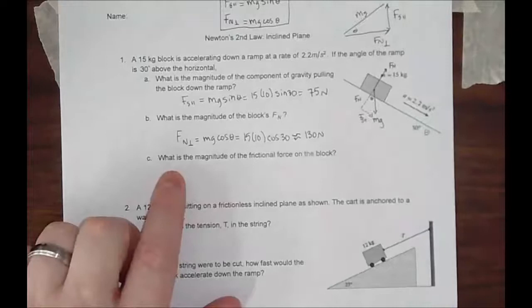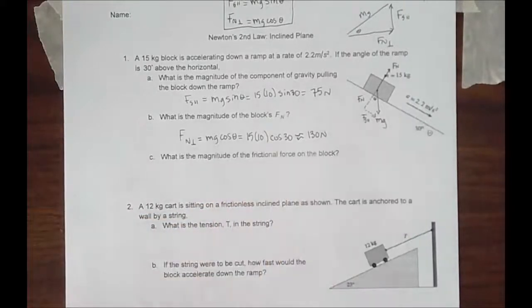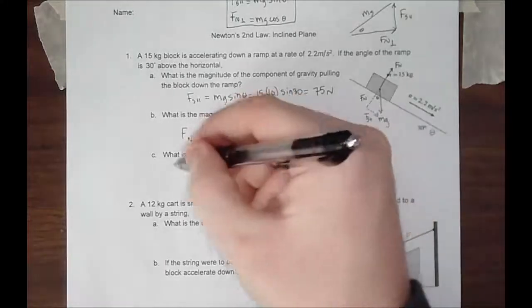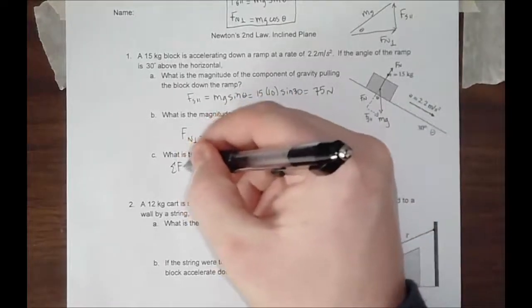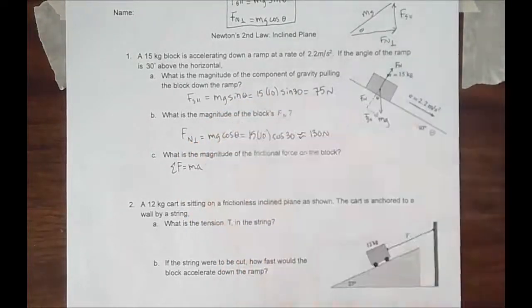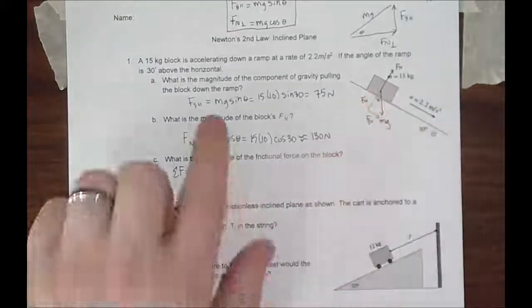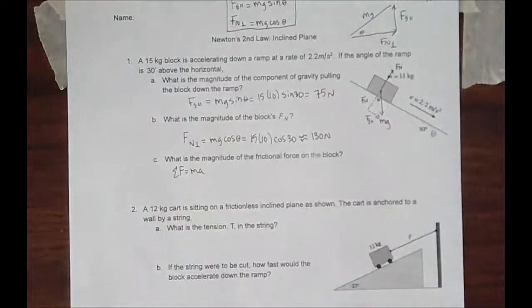Part C, what is the magnitude of the frictional force on this block? Now when we do this, we have to use Newton's second law. Sum of forces equals MA. We know the acceleration of the block and we know how heavy it is and we know the components. We can now find the frictional force.